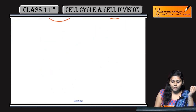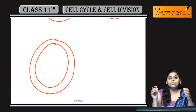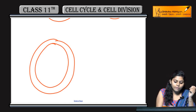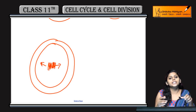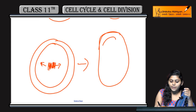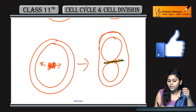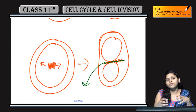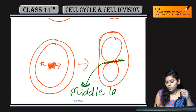But in the case of plant cells, the cell wall is very rigid. So in plant cells, a cell plate is made at the center and division proceeds from the center outward. The cell plate is made after cytokinesis, and this is called the middle lamella, which forms in between the two plant cells.